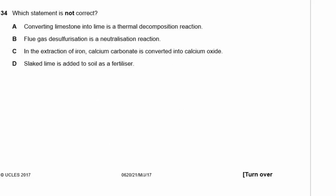Question 34. Which statement is NOT correct? A — converting limestone (CaCO3) into lime (CaO) is a thermal decomposition reaction — true. B — flue gas desulfurization is a neutralization reaction — true. C — in the extraction of iron, calcium carbonate is converted into calcium oxide — true. D — slaked lime is added to soil as a fertilizer — not correct; slaked lime neutralizes acids in the soil but doesn't fertilize it. Fertilizers provide nutrients for plant growth. The answer is D.